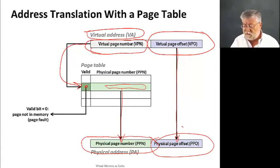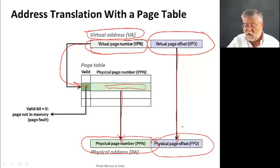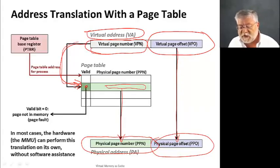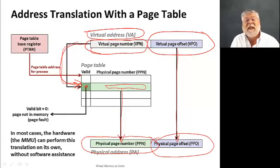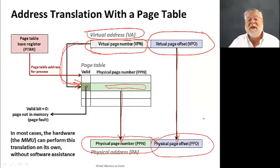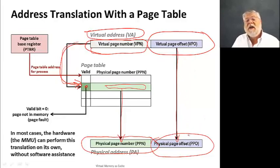If that entry is valid, we see in the page table a physical page number, which becomes the part of the physical address that we append to the physical page offset — which is just the virtual page offset passed straight through. That offset stays the same because we're handling entire blocks at a time, not cutting them up. So that's the basic address translation story. We use a page table base register — a special register the CPU maintains for a process — set by the operating system to indicate where the page table is resident in memory. All of this is done by the memory management unit in hardware, without any software assistance.